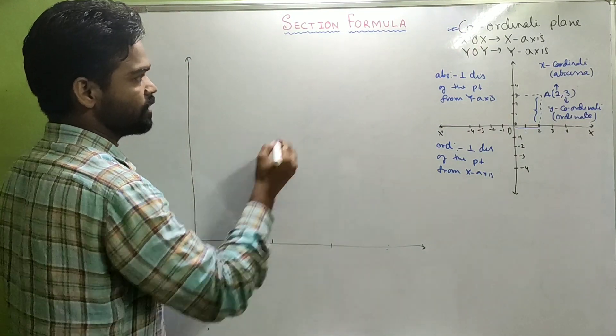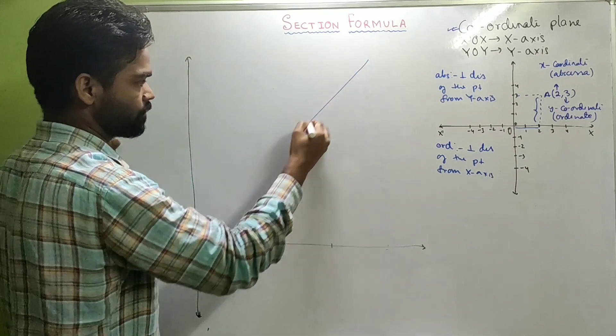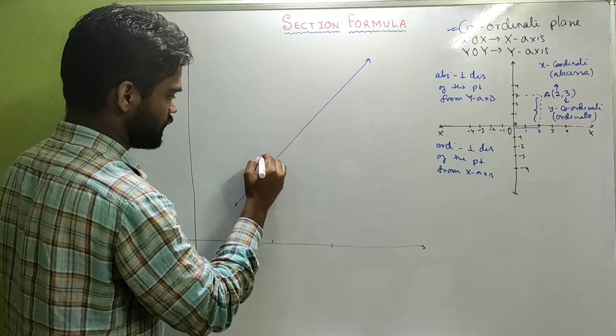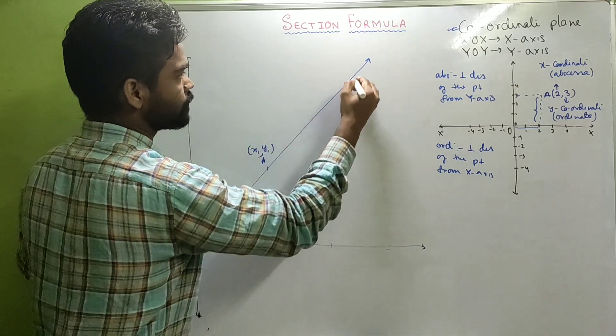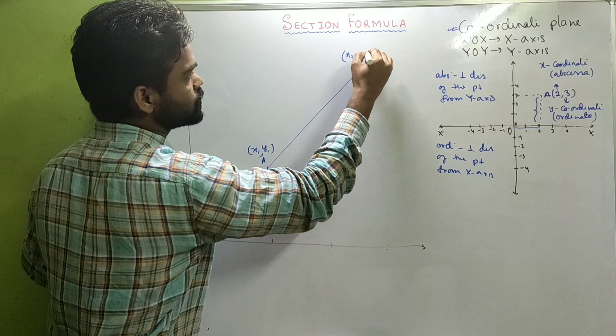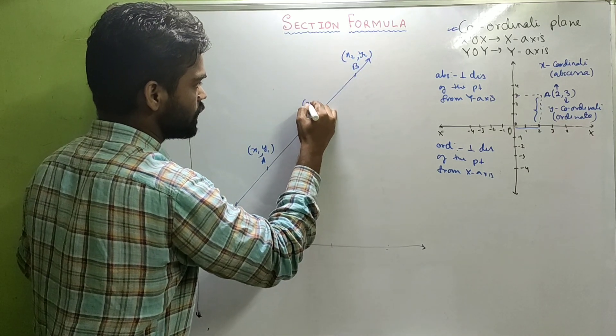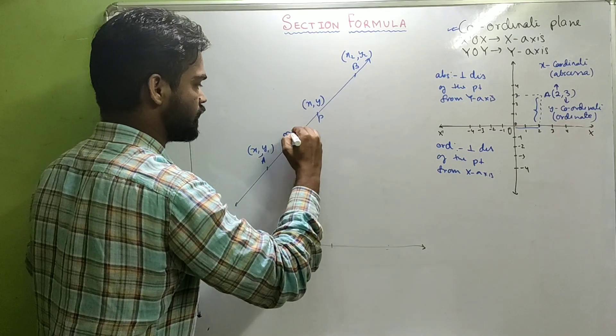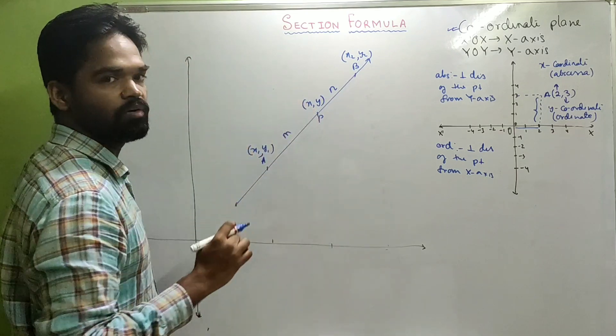Now look at section formula. Suppose in a coordinate plane, we take two points A (x1, y1) and B (x2, y2). And there's a point P (x, y) that divides AB internally in the ratio M is to N. Then what will be the value of x and y?